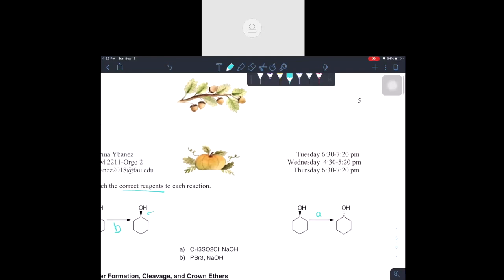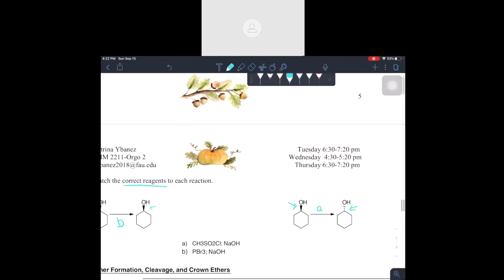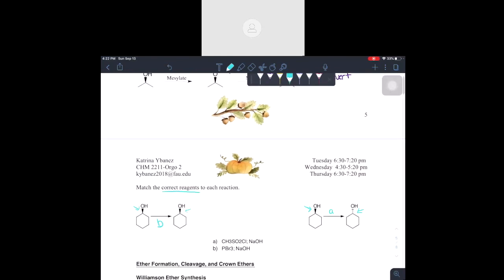For all the people that said PBr3 you are a hundred percent correct, this one is B and that means this one is A because we are going from wedged to dashed. And I'm serious, a question can be as easy as this. So be sure to just remember, you know, PBr3 stays the same, mesylate and tosylate invert.